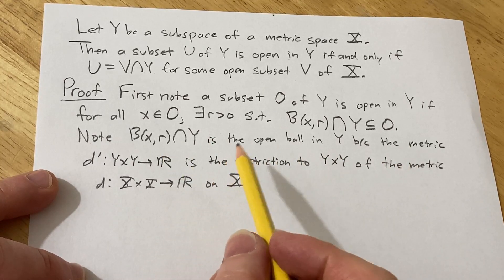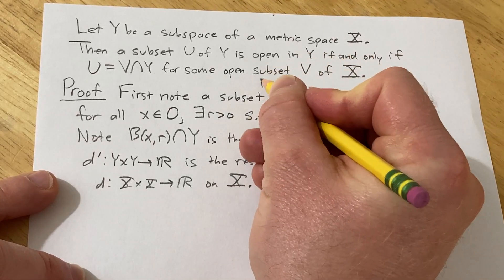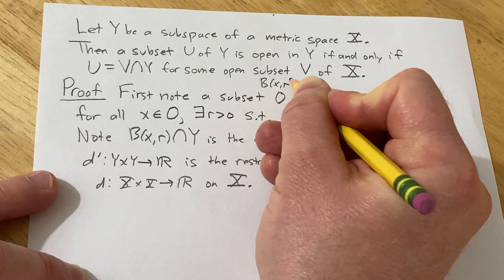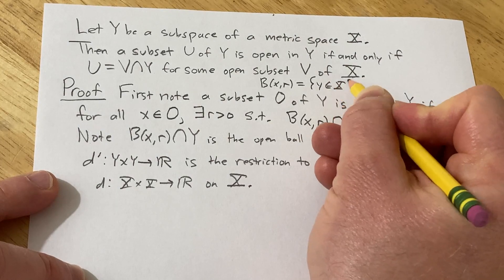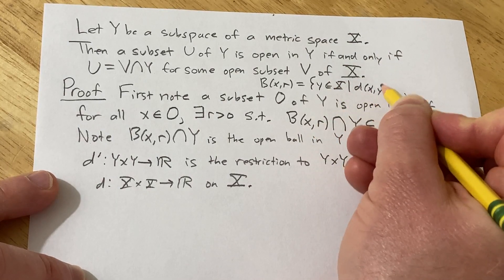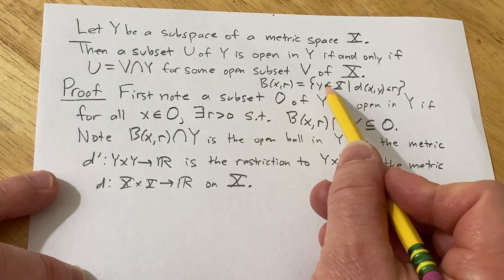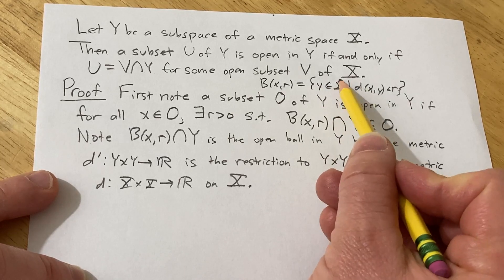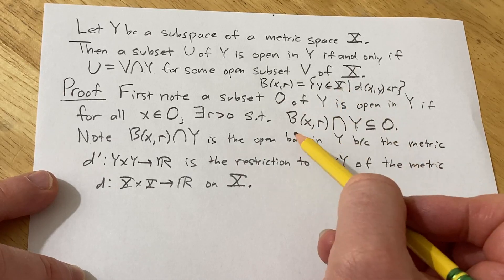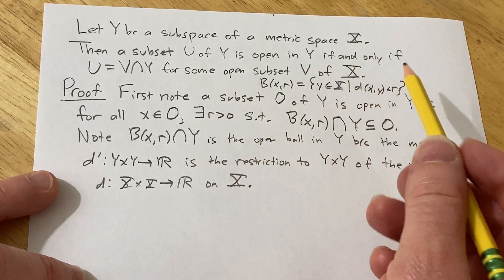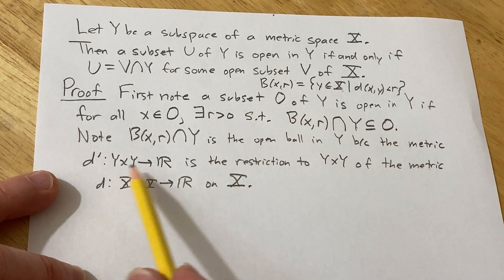Normally open balls are defined as follows: B(x,r) is the set of all y in X such that the distance between x and y is less than r. For it to be an open ball in Y it needs y in Y, so one way to do that is to intersect with Y — you're restricting the metric, which is what a subspace does. It's just a metric space but your metric is restricted to elements of Y cross Y.